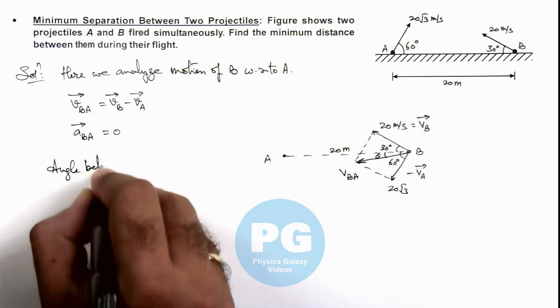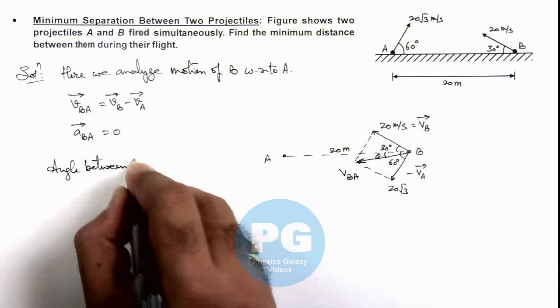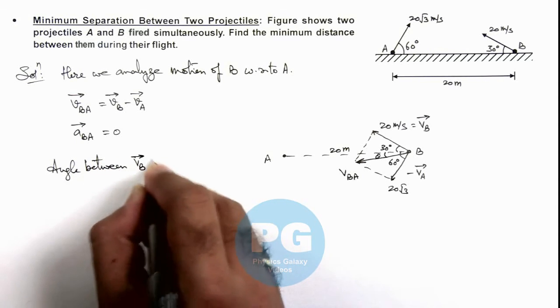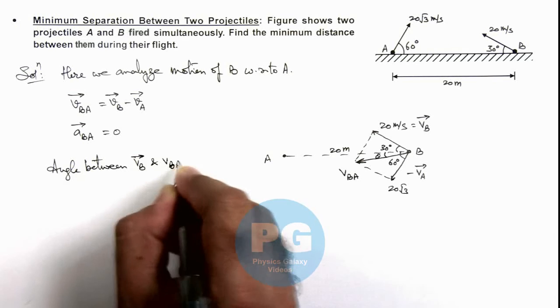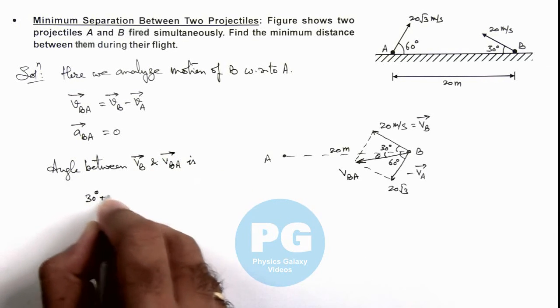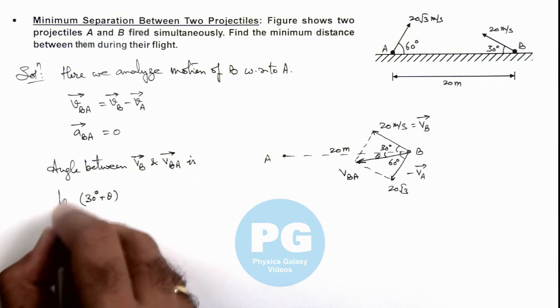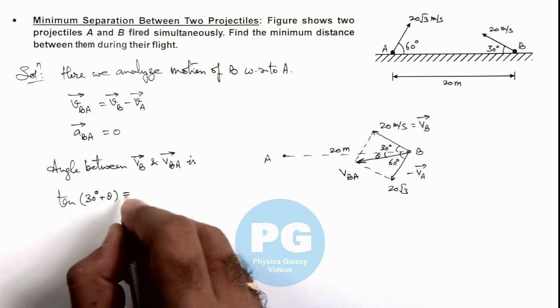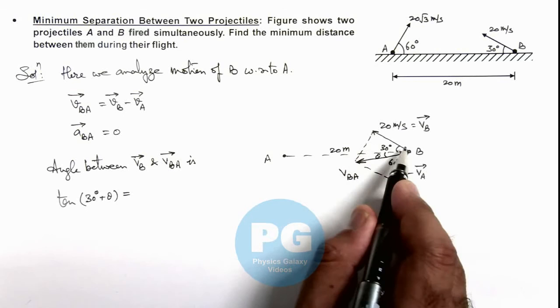This is 30 degrees plus theta, and tangent of this can be given as v_A upon v_B.